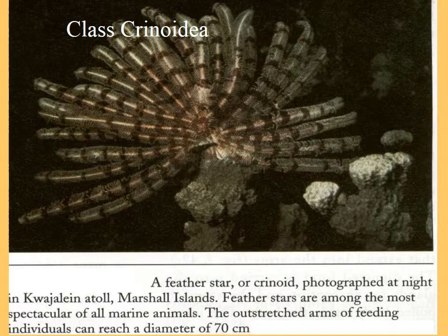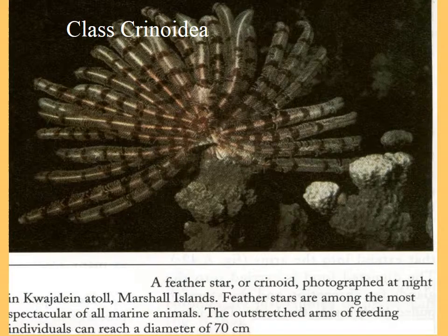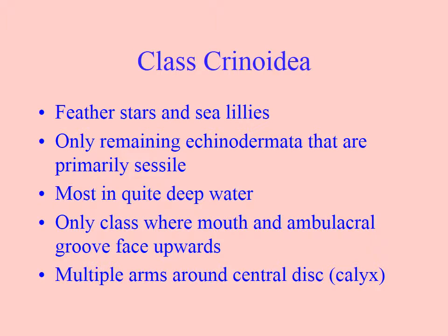Welcome to the very last class we're going to look at within the Phylum Echinodermata, and that is the class Crinoidea. The crinoids are things called feather stars, which you will find at places like the mushroom rocks at Mayer Island in shallow water, but the sea lilies are generally restricted to quite deep water, more than 100 meters. They used to be very prevalent at one time, but they've been mostly out-competed in shallower waters, so they're restricted to deep waters, especially the sea lilies.